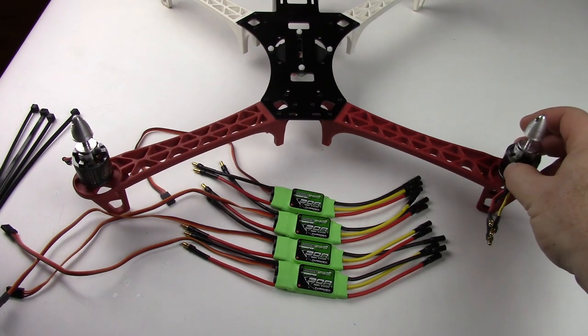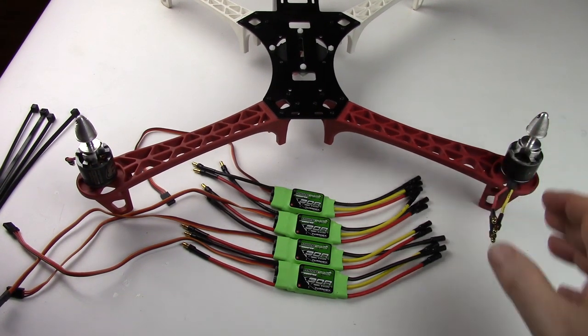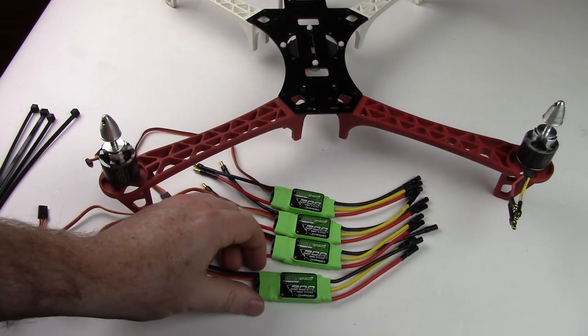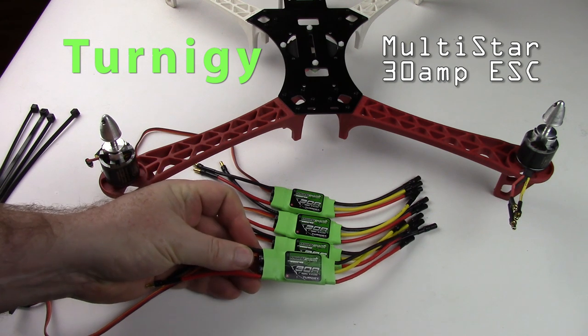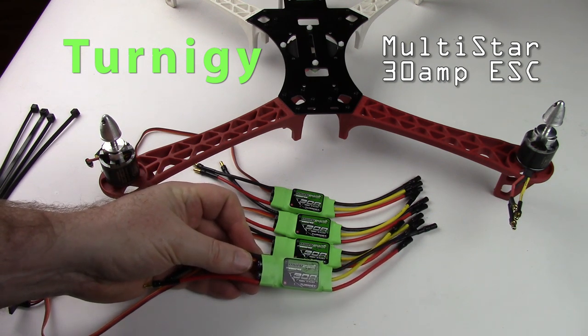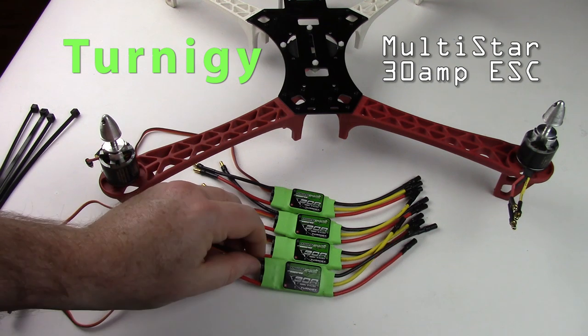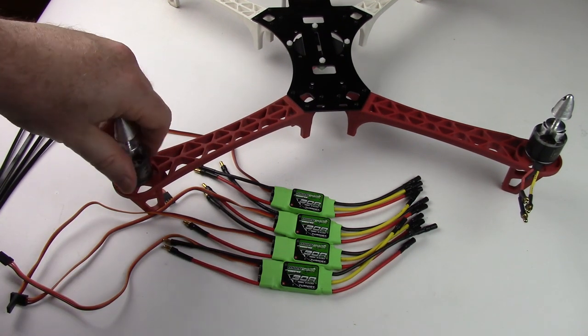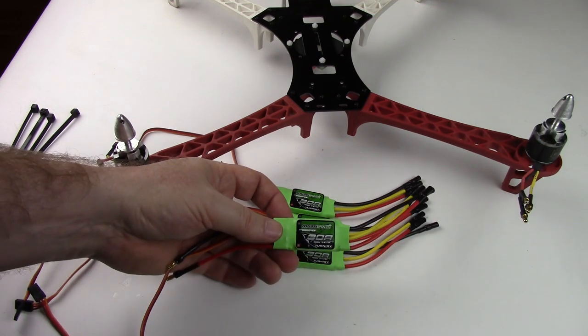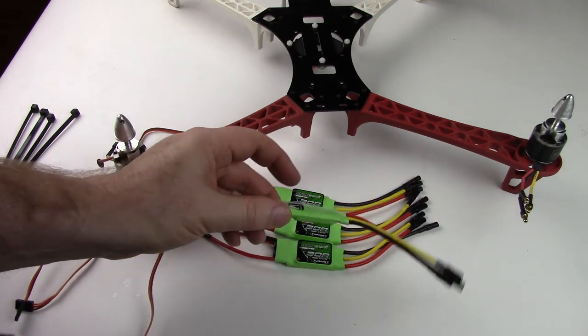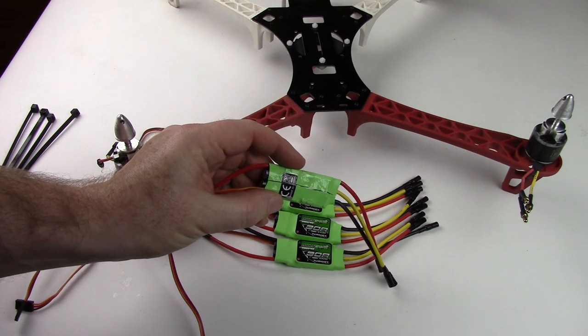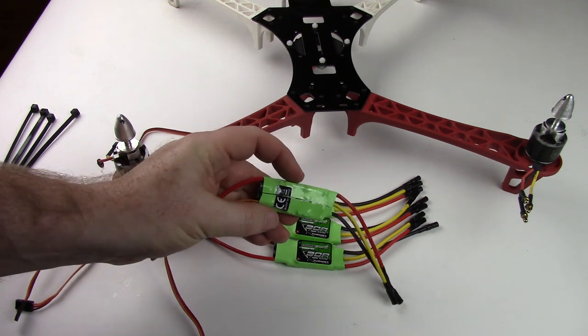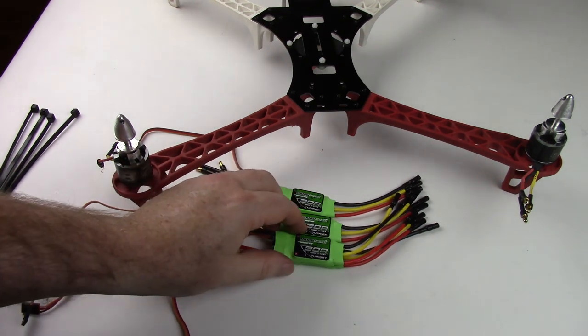So the motors are installed, they look good. The next thing we'll install is the ESC. For this project I'm using Turnigy Multistar 30 amp ESCs. They pair up nicely with the motors, and if you watched any of my other videos, these are the ESCs that I flashed with Simon K firmware in a previous video. We'll put a link in the description.